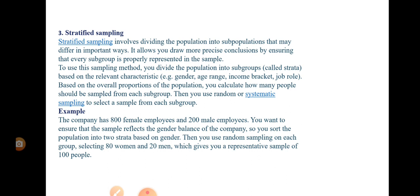To use this sampling method, you divide the population into subgroups called strata based on relevant characteristics. The characteristics you can use to divide include gender, age range, income bracket, job role, height, and so on — you can divide the population by any relevant characteristic.